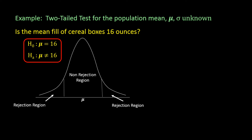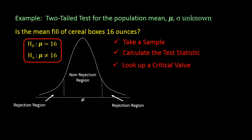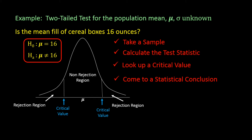To test our hypotheses using the critical value approach, we must first take a sample, then calculate the test statistic, and look up the critical value. The critical value acts as a boundary between the rejection and non-rejection regions. And finally, we would compare the test statistic with the critical value to come to a statistical conclusion.